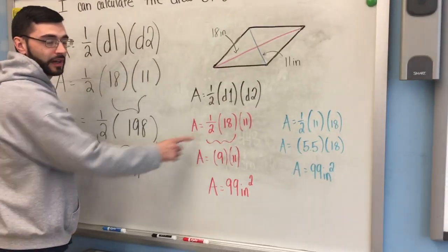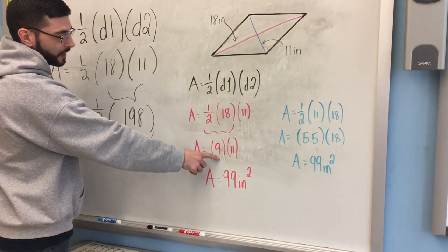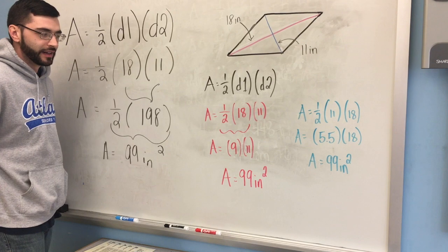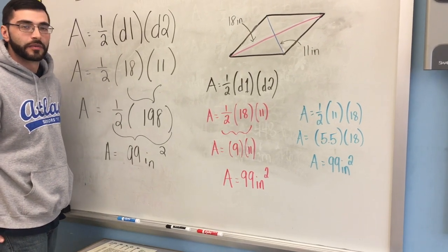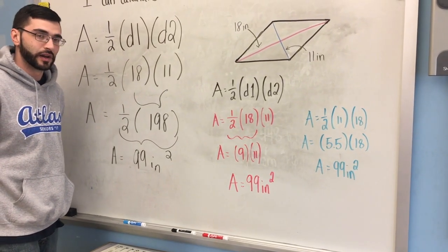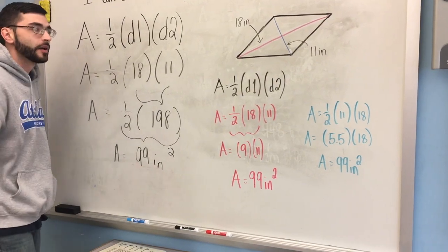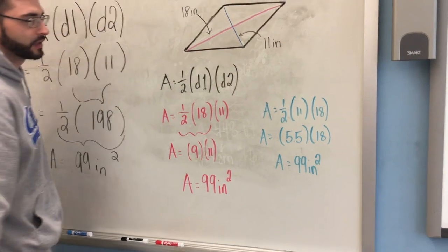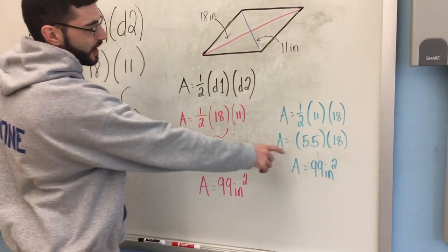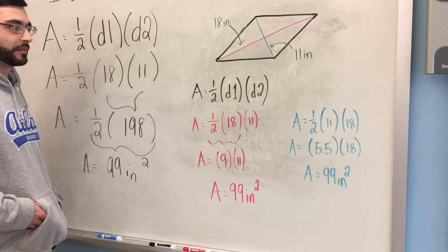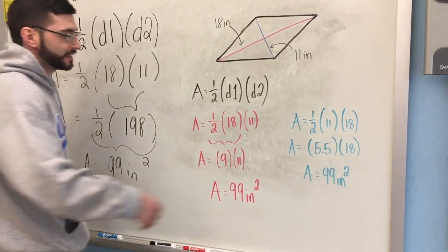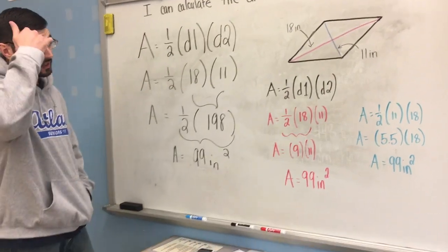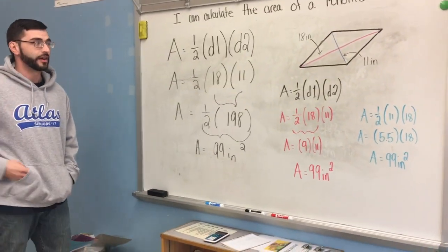So I did 18 divided by two, which gave me nine. Then I brought down my 11 and then multiplied nine times 11 for my final answer of 99 inches squared. Same thing. But you could also flip your diagonals. Say you wanted to divide 11 first and you would have gotten five and five tenths. You can then multiply that by 18. Same thing. You can get 99 inches squared. So here we have three different ways that we could solve for the area of the rhombus.